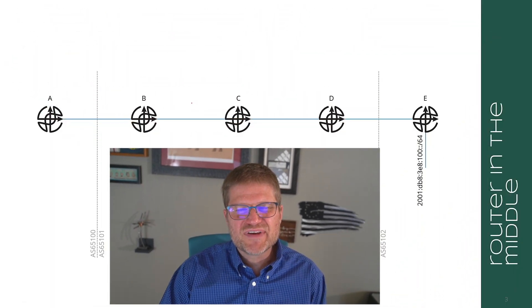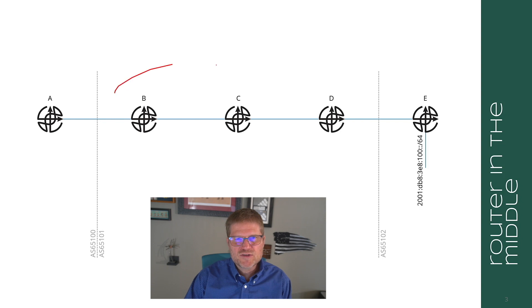Another option that we had back in the bad old days was what were called confederations or just confeds. So what we would do in a confederation is we would put all three of these routers in a single confederation and we would call that confed 65101.